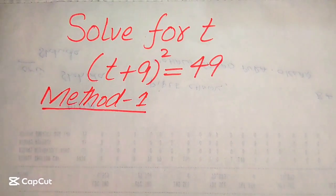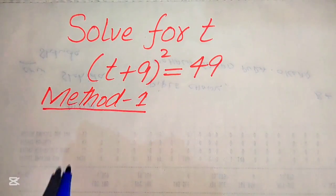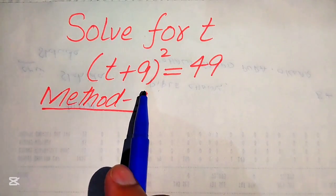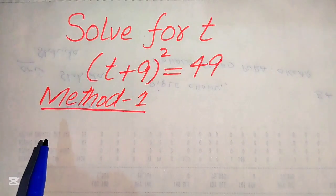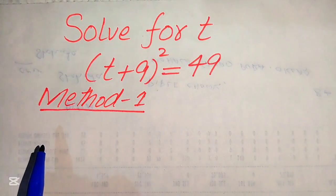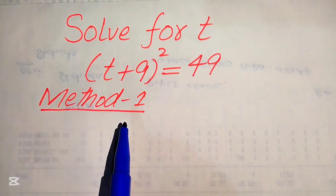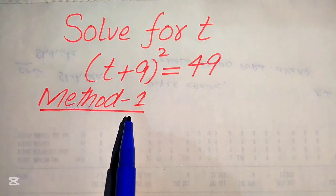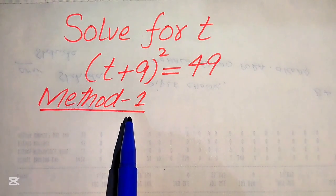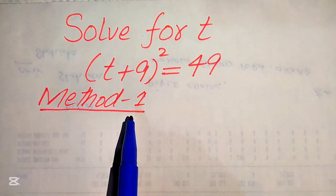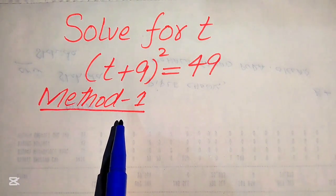Hello everyone, welcome. We will solve this algebra problem where (t + 9)² = 49 and find the values of t. We will solve this problem using two methods, and if you have any other method in mind, please write it in the comment section.